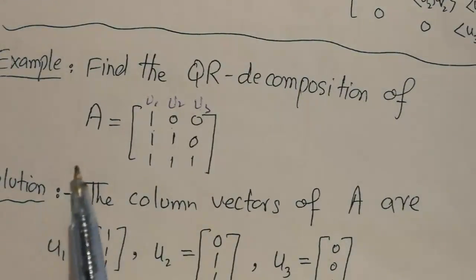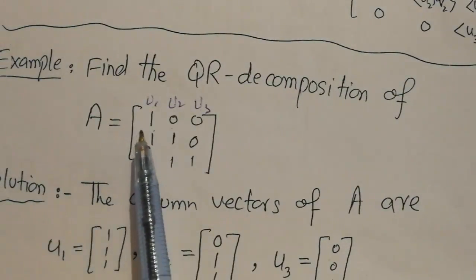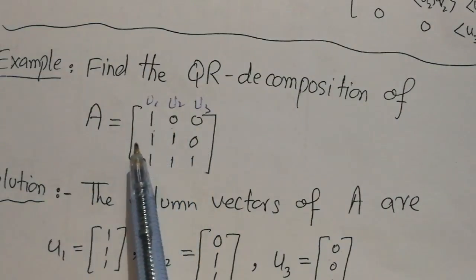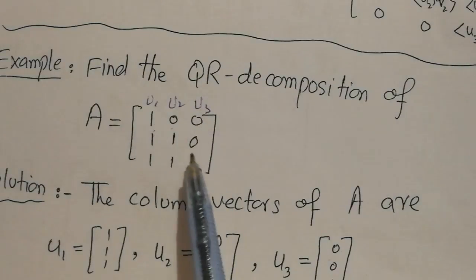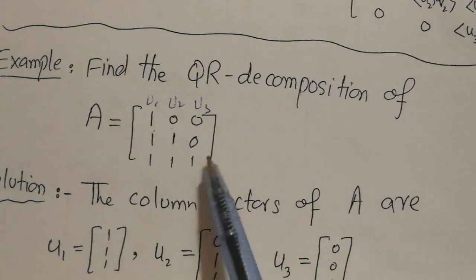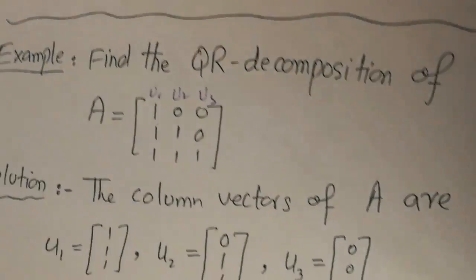Suppose we have a matrix A whose columns are U1=[1,1,1], U2=[0,1,1], and U3=[0,0,1]. We want to decompose or factorize this matrix A into its QR decomposition.